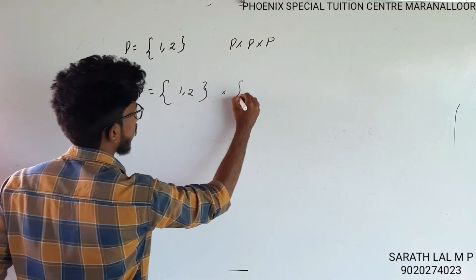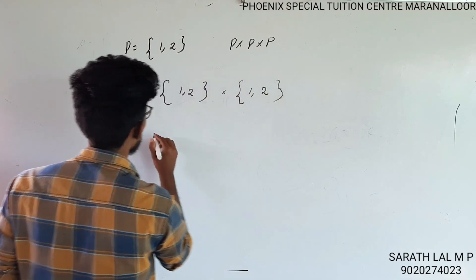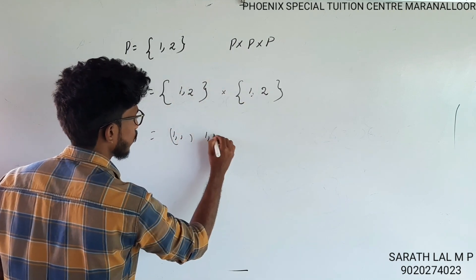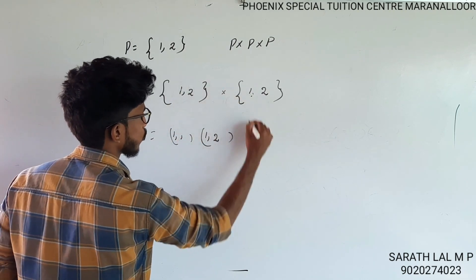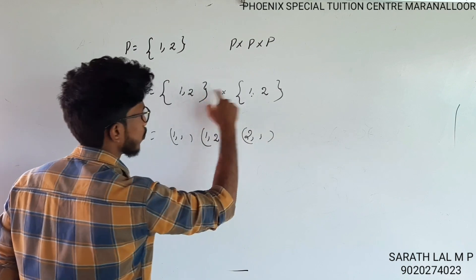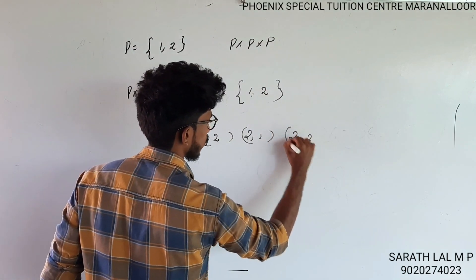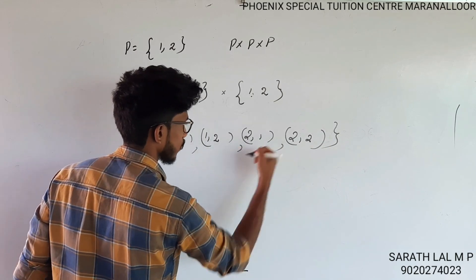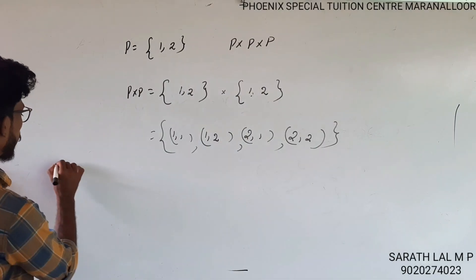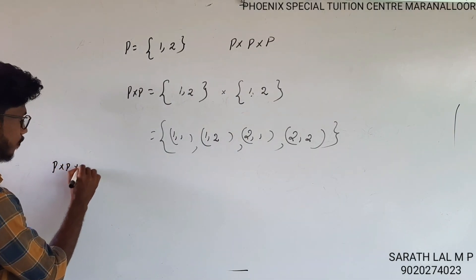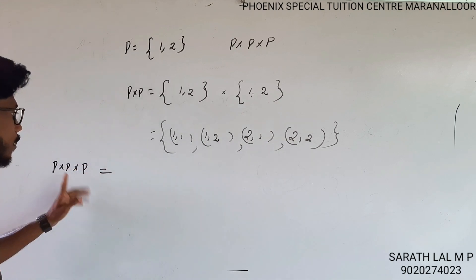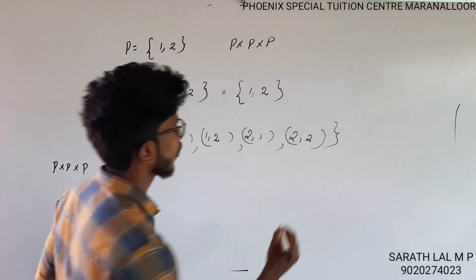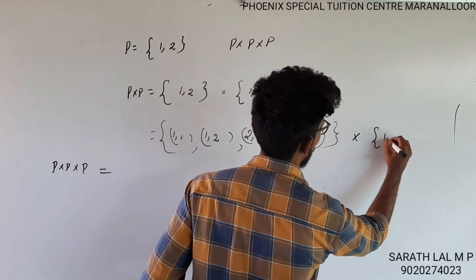P cross P gives us the pairs: (1,1), (1,2), (2,1), (2,2). Now let's do P cross P cross P. If you want to do it, then cross again P.